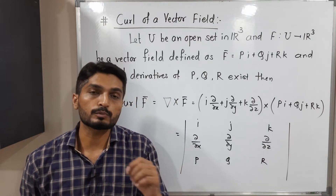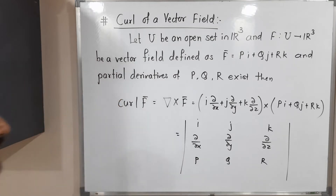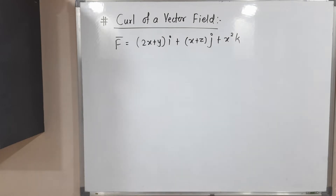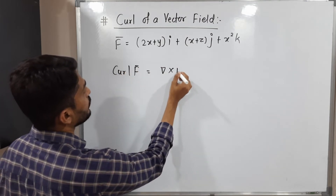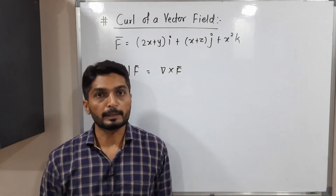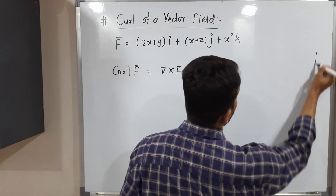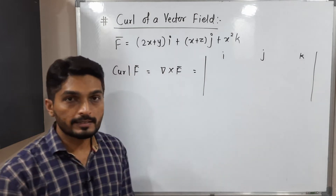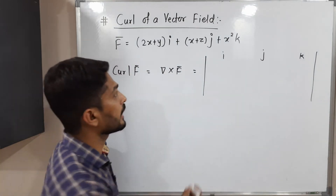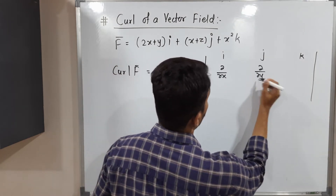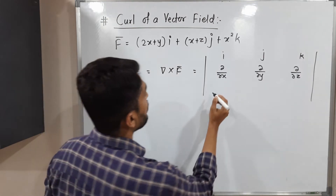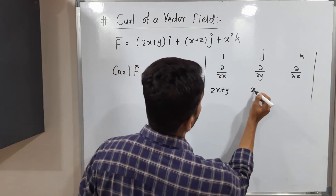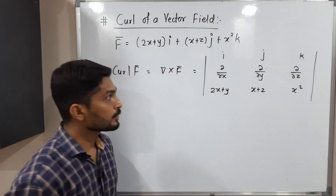Let us discuss a simple example so you can easily understand the concept. We have this vector field F-bar and we have to find its curl. Curl of F-bar means del cross F-bar, which we find by solving a determinant. The first row is i, j, k; the second row is ∂/∂x, ∂/∂y, ∂/∂z; and the last row has the components of F-bar: (2x + y), (x + z), and x².